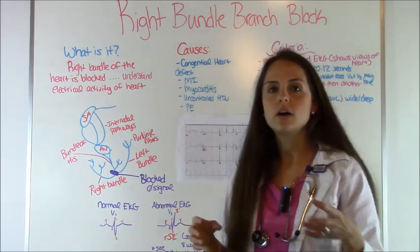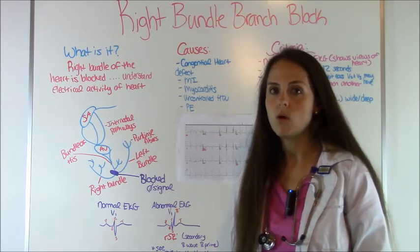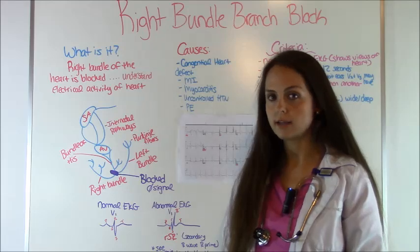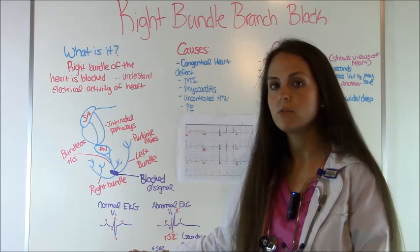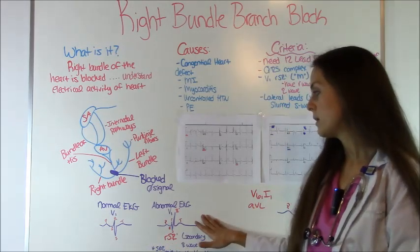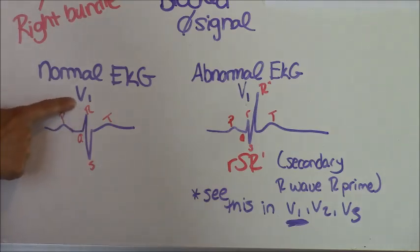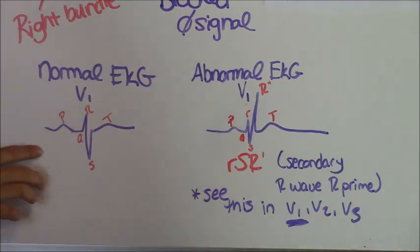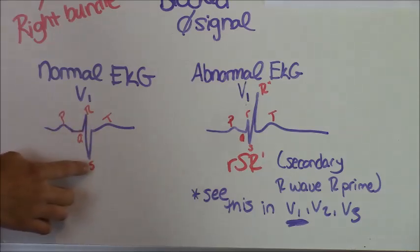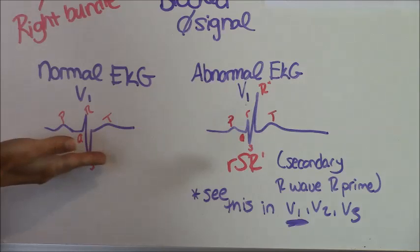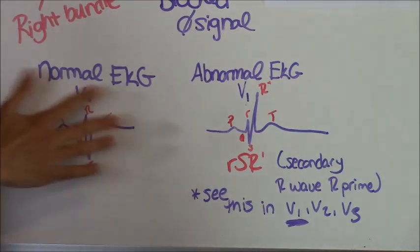Whenever you're looking at a 12-lead, you specifically want to look at the septal view which is V1, because this is going to tell you a lot. I'm going to zoom in right here so you can see what a normal EKG looks like in V1 and what an abnormal one with a bundle branch block looks like in V1. In a normal EKG 12-lead in lead V1, you're going to have a beautiful P wave, a QRS complex with downward deflection, and then your T wave. The QRS complex is less than 0.12 seconds — everything looks normal.